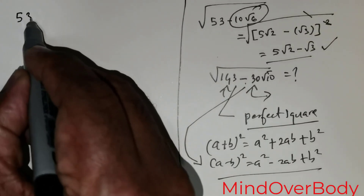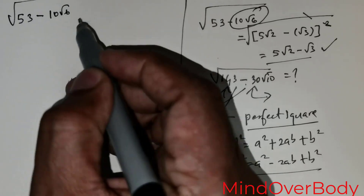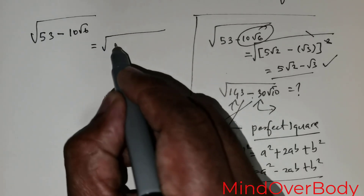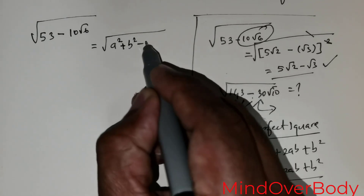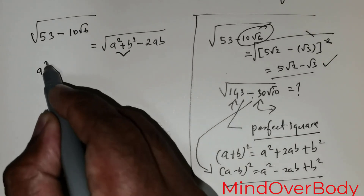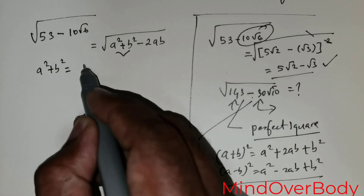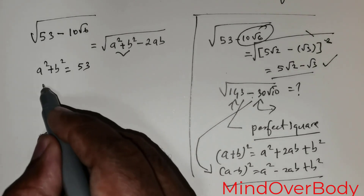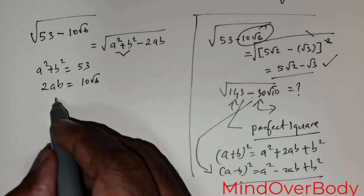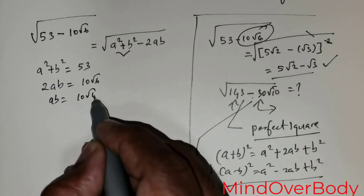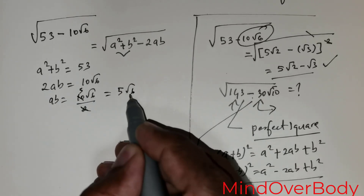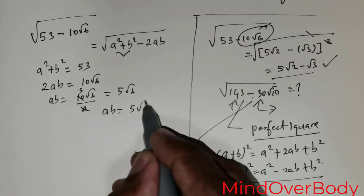We are given the square root of 53 minus 10 times root of 6. My intention is to rewrite this as the square root of a squared plus b squared minus 2ab. So my first two terms: a squared plus b squared equals 53. And my second term: 2ab equals 10 times root of 6, which means ab equals 5 times root of 6. From here, b equals 5 root of 6 over a.